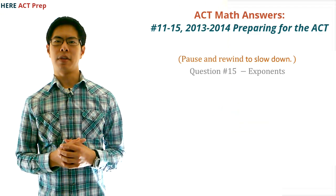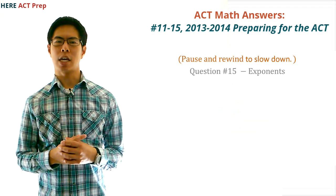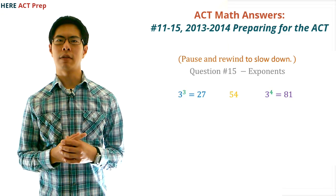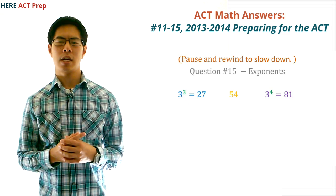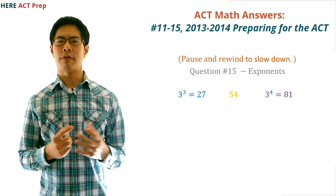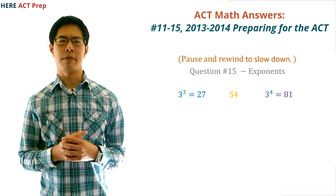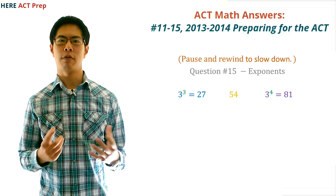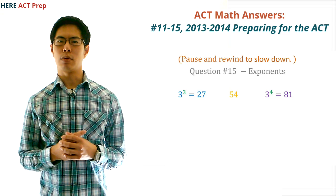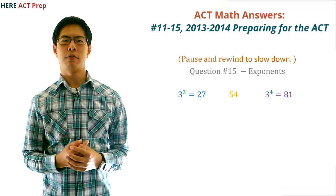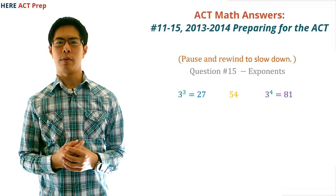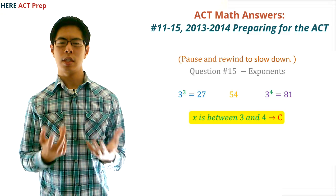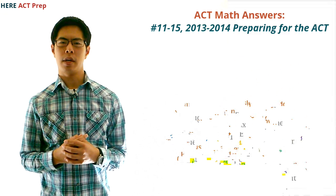Question number 15. The concept this question tests is exponents. To do this question, we simply find two consecutive integers for x that make 3 to the x fall below and above 54. When we do this, we find that 3 to the 3rd power equals 27, and 3 to the 4th power equals 81. So 54 must fall between 3 to the 3rd power and 3 to the 4th power. So the answer is C, between 3 and 4.